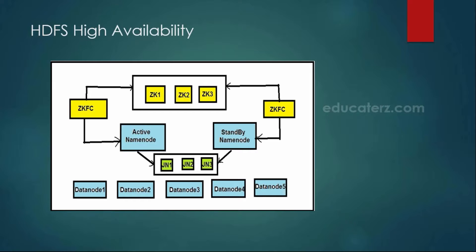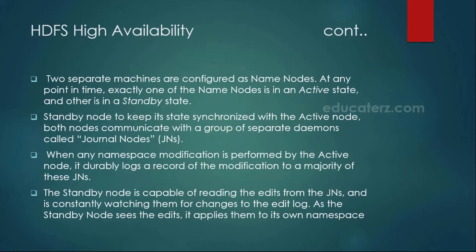Just to give you some pointers: we will be having two separate machines — one is the active name node, another one is the standby name node. You have to purchase the same configuration of machines for both of them. As we talked about journal nodes, the journal nodes sit between both the active node and the standby node. The standby node will read the information from the journal nodes, and the edit log information will be placed in the journal node directories. Also, if you see any namespace modifications — meaning if you are adding any new files, updating permissions, or any such kind of modifications — your active name node will write a log entry into your journal nodes, and that will be read by your standby name node.